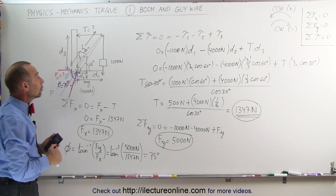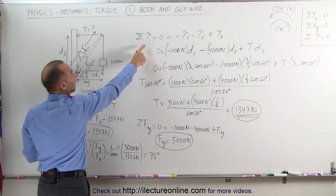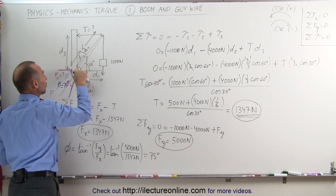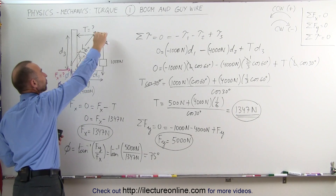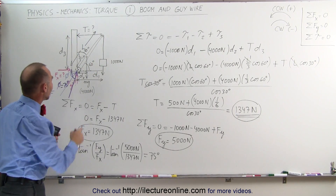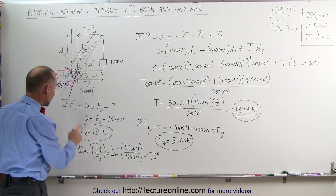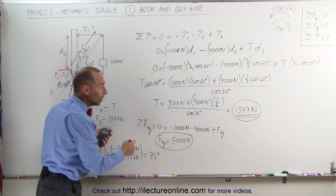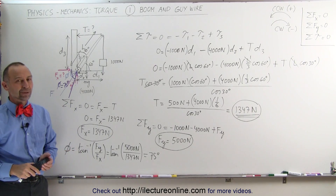That's how you do a problem like this. In summary: find the sum of torques equal to zero about a chosen pivot point, recognize all forces contributing to the torque, then sum forces in the x-direction and y-direction separately to find the unknown forces at the base of the boom. That's how we do it.